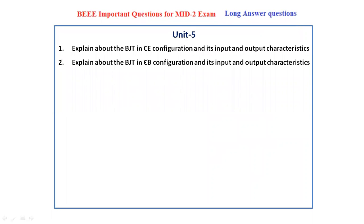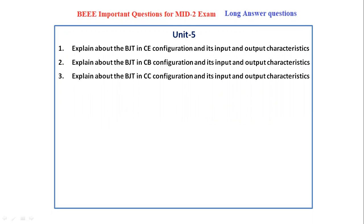Next, explain about the BJT in common base configuration and its input and output characteristics. Next, explain about the BJT (bipolar junction transistor) in common collector configuration and its input and output characteristics. Next, compare common base, common emitter, and common collector configurations — you have to explain all three configurations in a comparison.